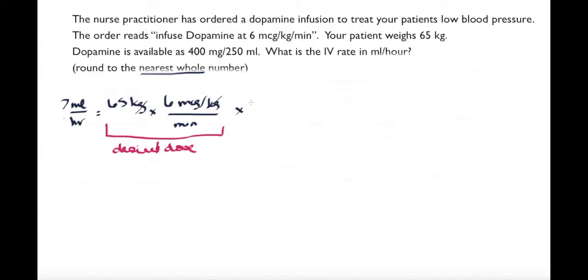Next, I have an available dose of 400 milligrams in 250 mils and I need to convert this into micrograms, so my available dose and its conversion gets put into the formula.